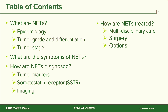We're going to be talking first about what neuroendocrine tumors are and how common they are. We'll talk about the grade and differentiation of neuroendocrine tumors, how neuroendocrine tumors are staged, and the different symptoms that can happen. Then we'll move on to how neuroendocrine tumors are diagnosed, the common labs used in clinical practice, imaging, and what somatostatin receptors are. Finally, we'll talk about treatment, the importance of multidisciplinary care, and the treatment options.